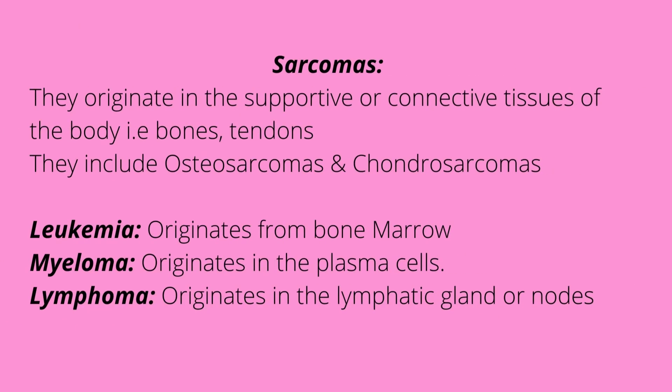Sarcomas originate from supportive or connective tissue such as bones, tendons, and cartilage, and include osteosarcomas and chondrosarcomas. We also have leukemia, which originates from bone marrow; melanoma, which originates from plasma cells; and lymphoma, which originates from lymphatic glands or nodes.